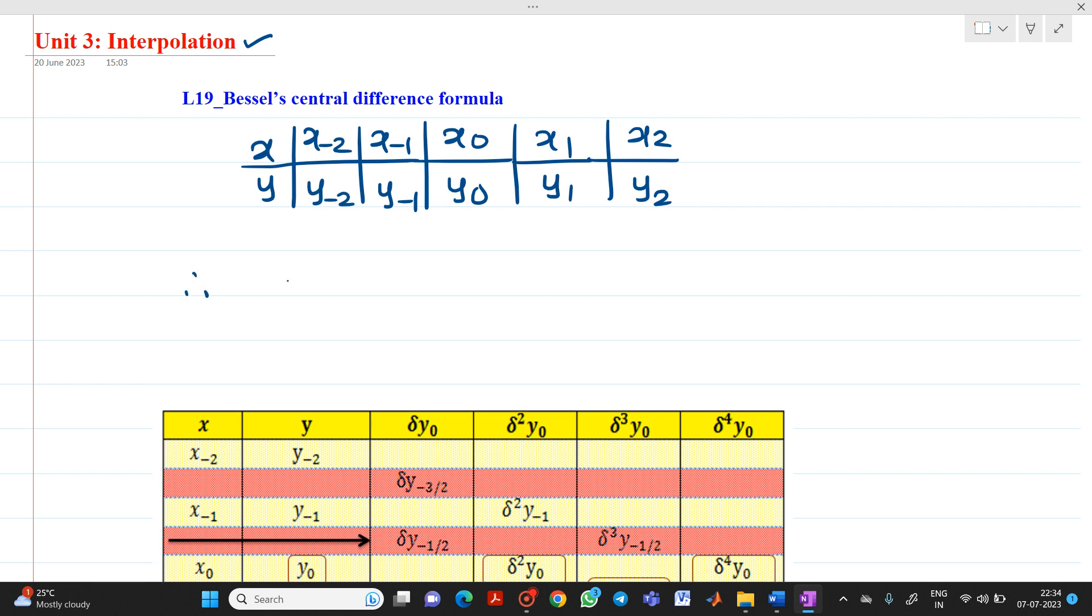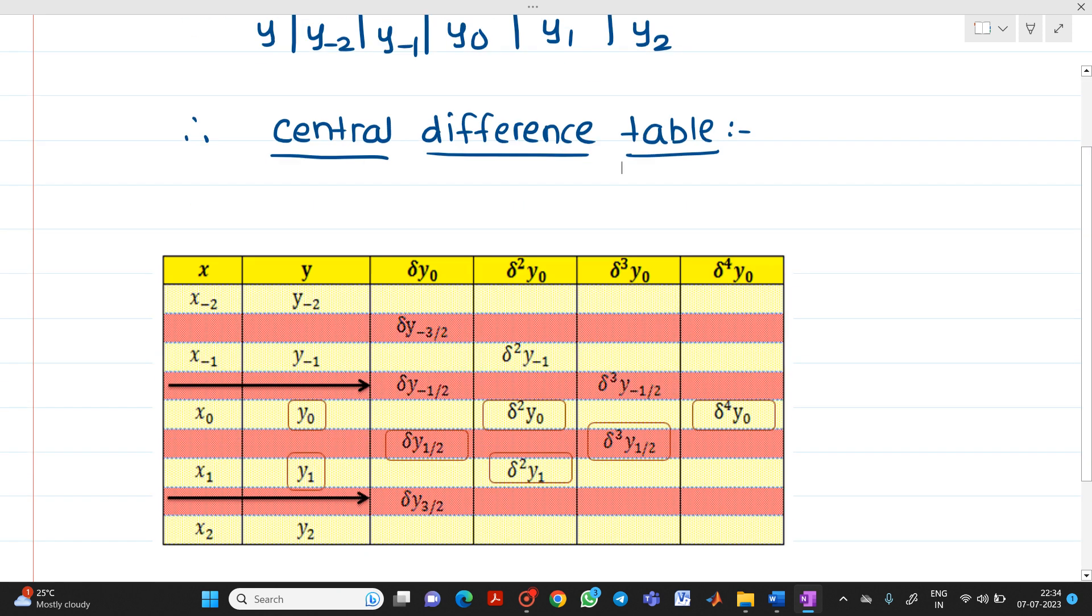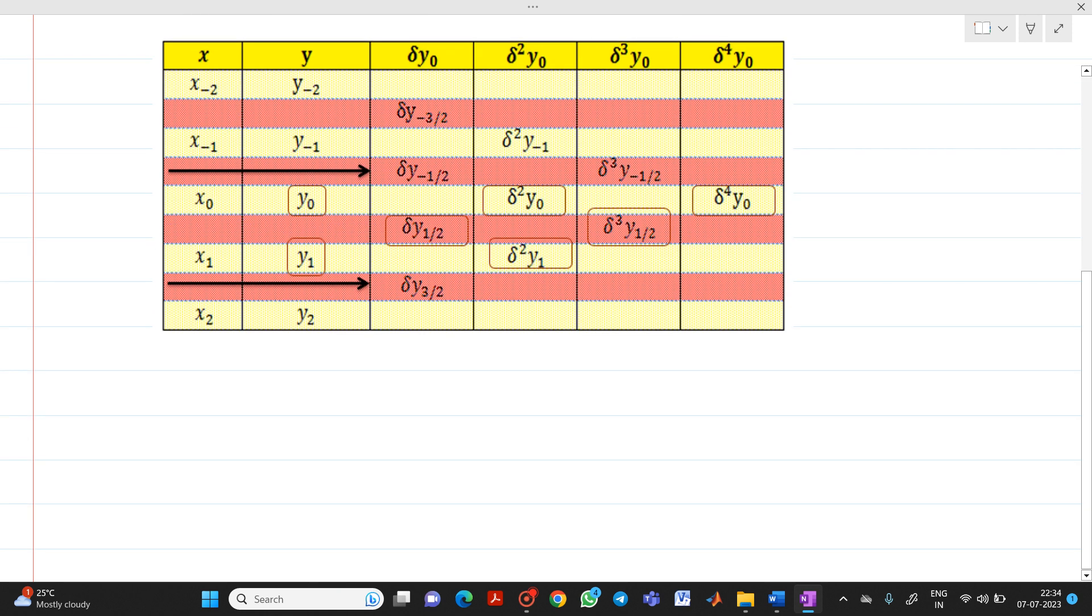Now, based on the data, we have to prepare Central Difference Table. Already we have gone through how to prepare a Central Difference Table. For that, you refer to the video lecture in which we explained the Central Difference Operator. Now, if you see here, purposefully I have made such a design like this. Here we have taken two values. Here we have taken one value. Again, two values. Here it will be one value.